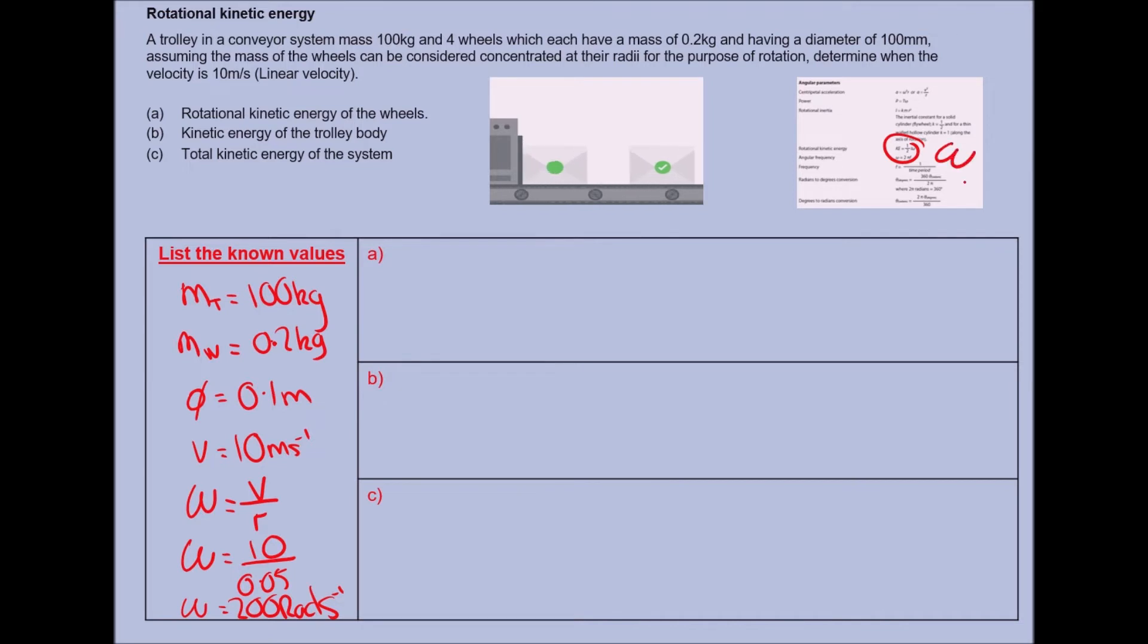Whenever we see this symbol omega, or that fancy W as some of you prefer to call it, we're using that 200 value. Let's go ahead and start to solve this first part of this question, the rotational kinetic energy of the wheels.